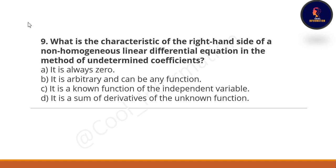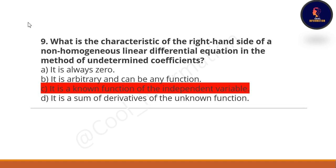Next question: what is the characteristic of the right hand side of non-homogeneous linear differential equations in the method of undetermined coefficients? Options include: always zero, arbitrary and can be any function, a known function of the independent variable, or a sum of derivatives of the unknown function. The correct option is C — it is a known function of the independent variable.